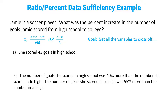Statement one: she scored 43 goals in high school. In math, that means H equals 43. Is that going to be enough information to get all of the variables to cancel off? Absolutely not — we have nothing on college at all. So we end up with C minus 43 over 43. That's insufficient.